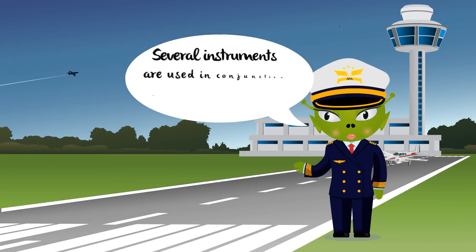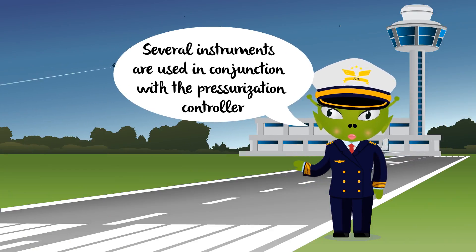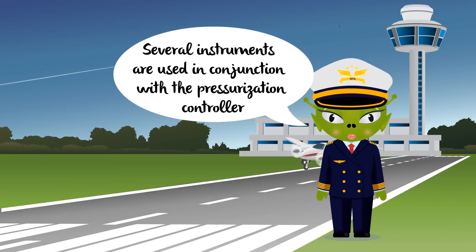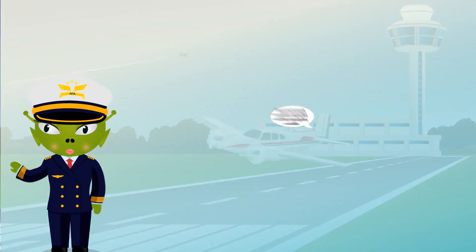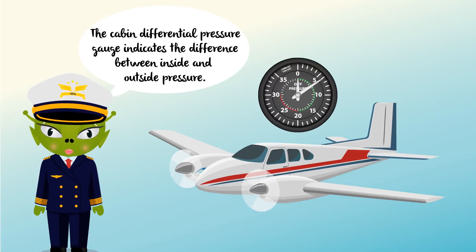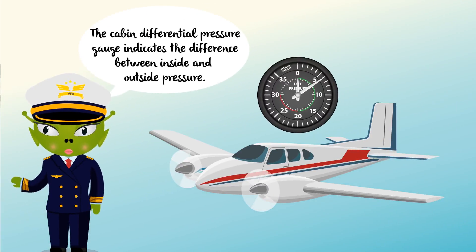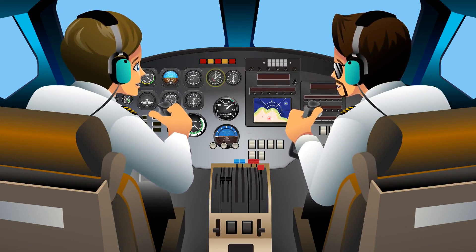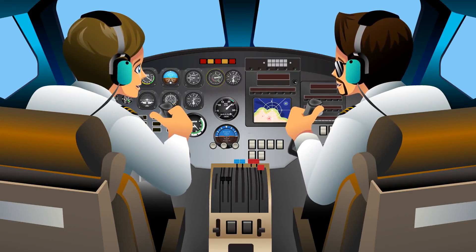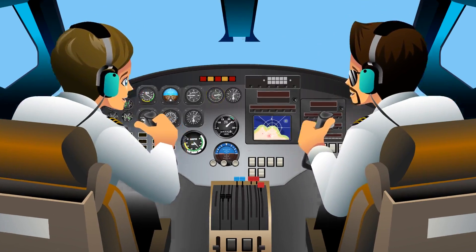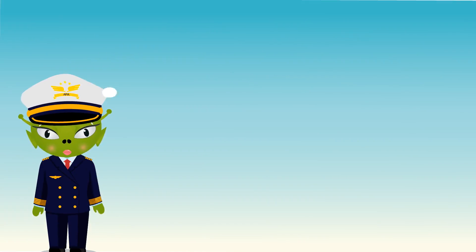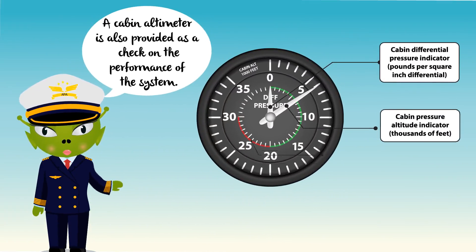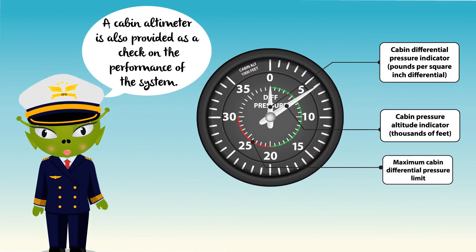Several instruments are used in conjunction with a pressurisation controller. The cabin differential pressure gauge indicates the difference between inside and outside pressure. The pilot should monitor this gauge to assure that the cabin does not exceed the maximum allowable differential pressure.